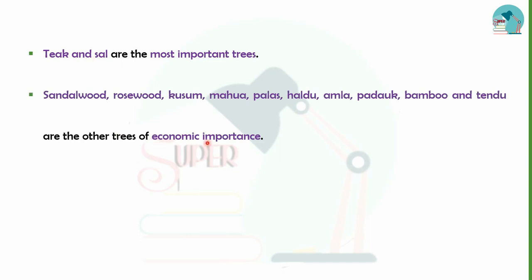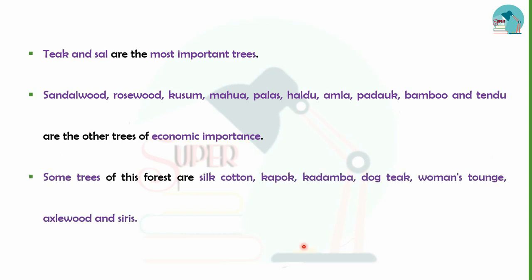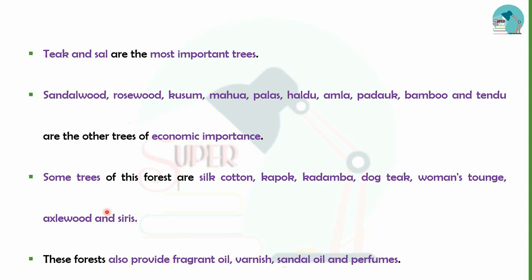Some economically important trees in this forest are Sandalwood, Rosewood, Kusum, Mahua, Palash, Haldu, Amla, Padauk, Bamboo, and Tendu. Other trees include Silk Cotton, Cork Oak, Kadamba, Axlewood, and various other species. This type of forest also provides fragrant oils, varnishes, sandalwood oil, and perfumes.